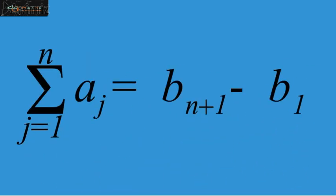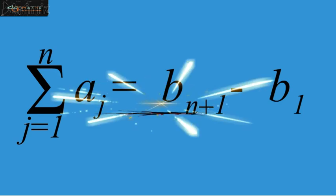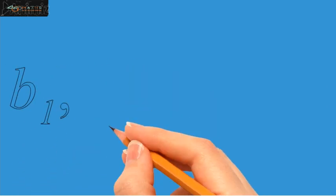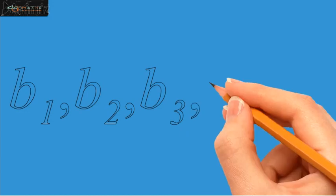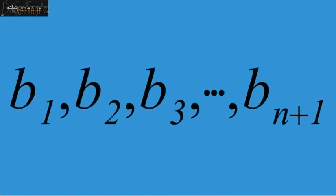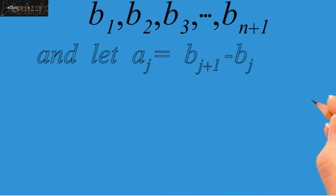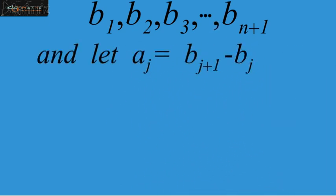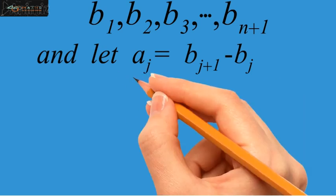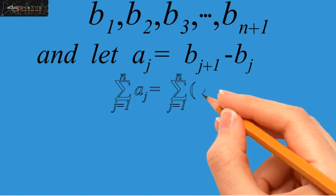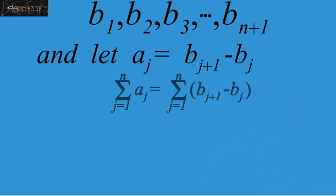Then, let me discuss a very special conjecture with you, which will help us in proving the upcoming formulas. Suppose we have a sequence b1, b2, b3, and so on, bn plus 1, and let aj equals bj plus 1 minus bj. Now, applying summation to both sides of this relation, where j varies from 1 to n.